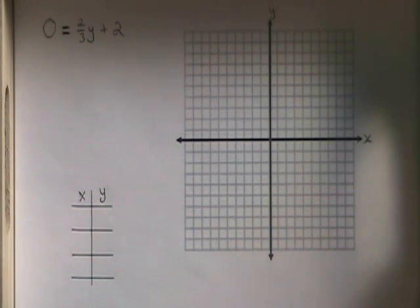This video will illustrate how to graph horizontal and vertical lines. The equation for a horizontal or vertical line has only one variable, x or y, instead of having both.